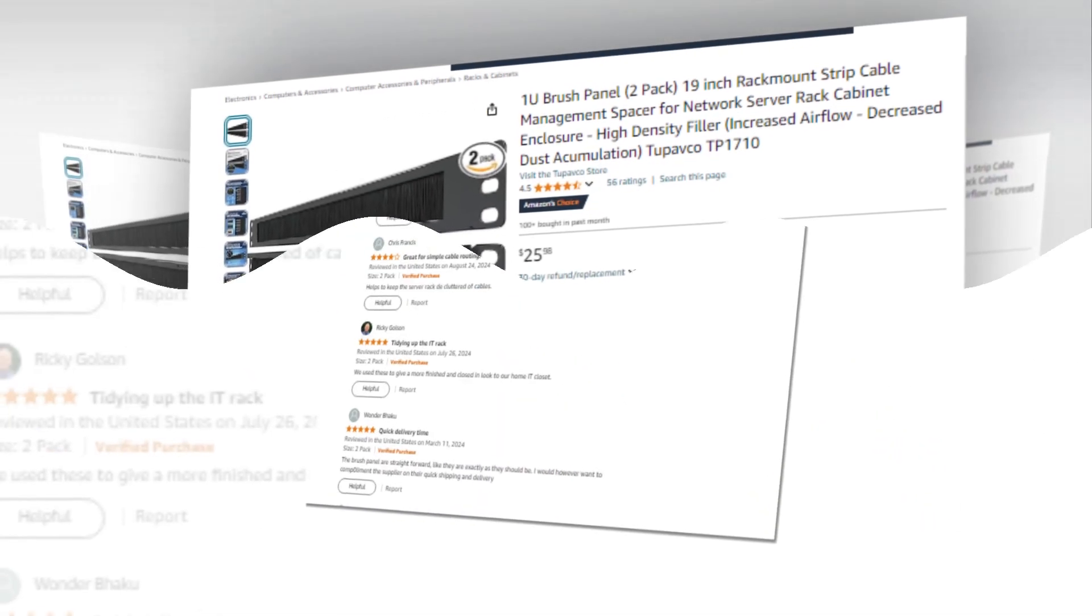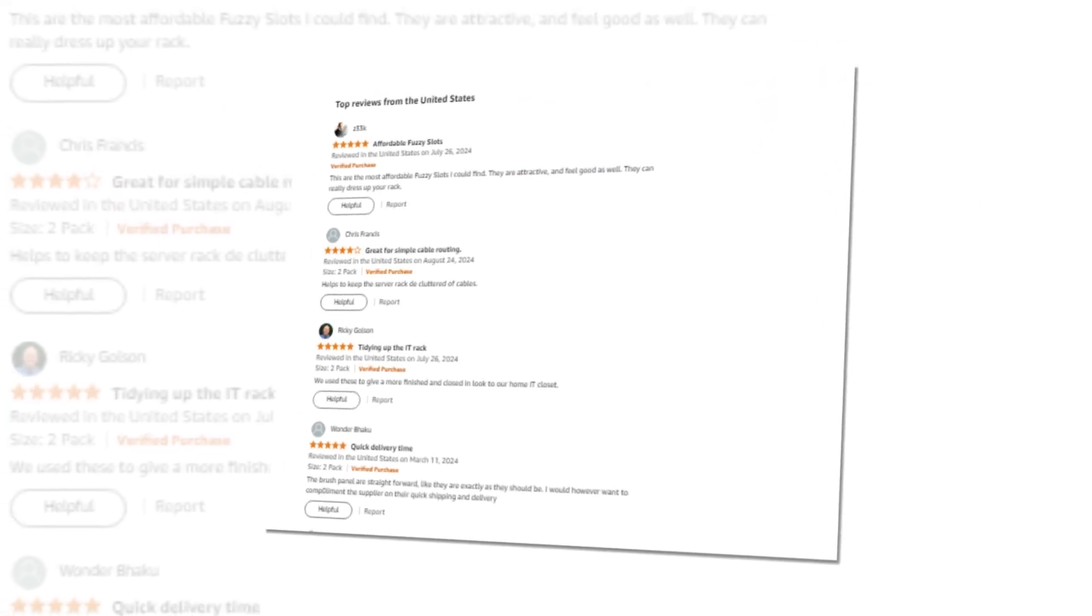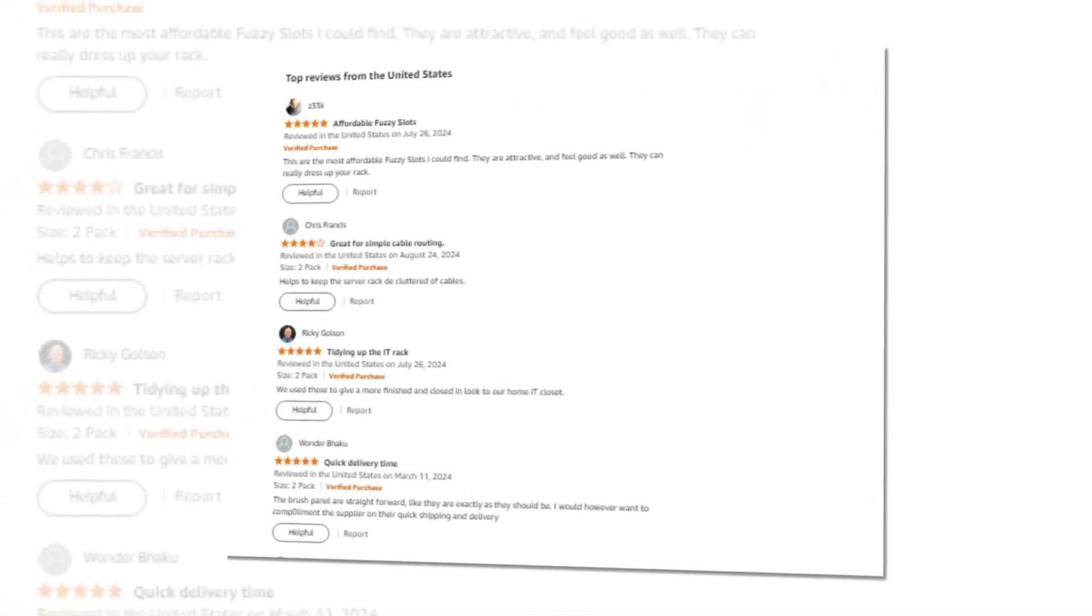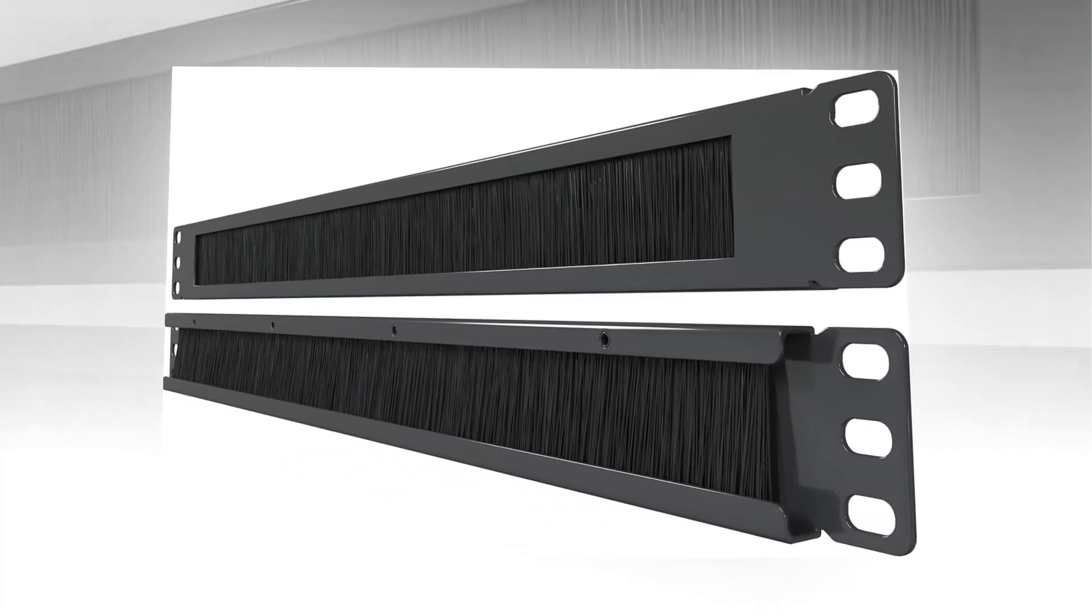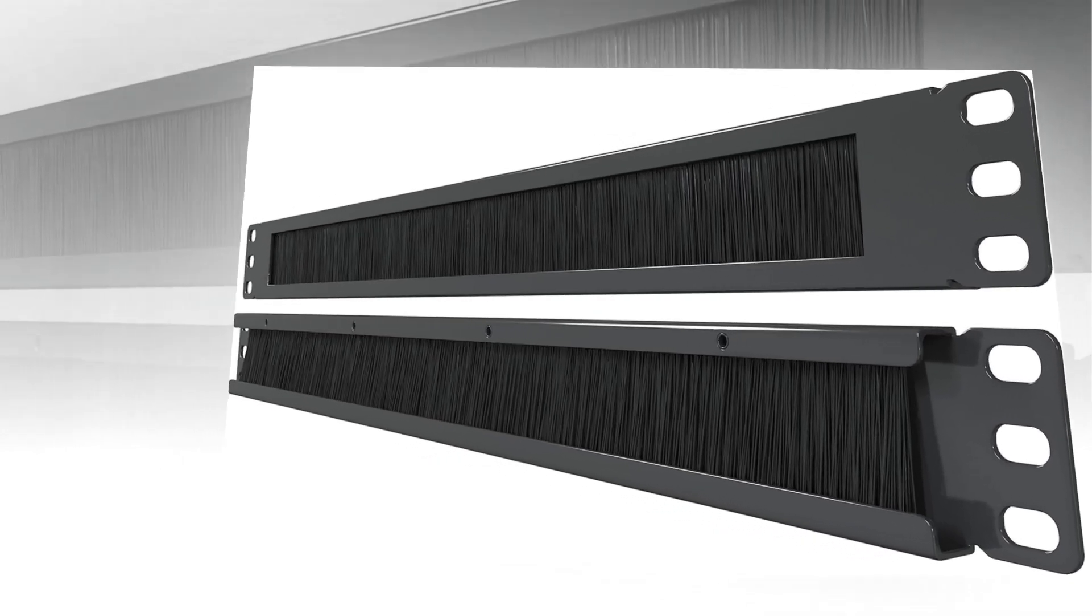Today we will discuss the best 1U brush panel, 2-pack, 19-inch rack mount strip cable management spacer for network server rack cabinet enclosure, high-density filler, increased airflow, decreased dust accumulation, 2Pafco TP1710 of Amazon.